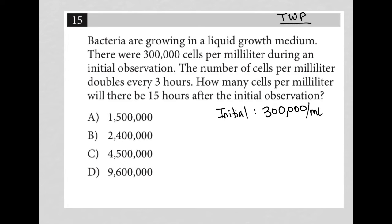Next sentence, the number of cells per milliliter doubles every three hours. So we're starting with 300,000, and we know that number doubles every three hours. Next sentence, how many cells per milliliter will there be 15 hours after the initial observation? So we're basically saying, what happens at 15 hours? There's my translation here. These three bullet points basically is this question translated.